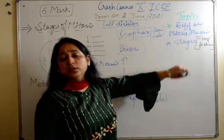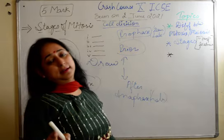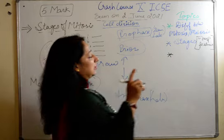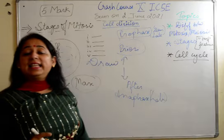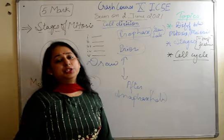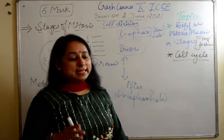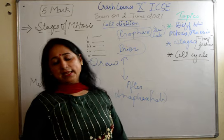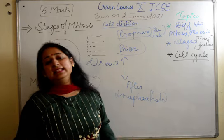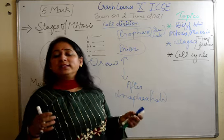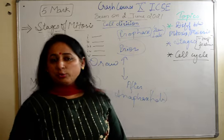Very important 5-marker question — the stages. The next important topic is the cell cycle. The cell cycle has G1, G2, S phase, G0 phase, and M phase — multiple phases. You have to learn the whole cell cycle. There is a picture given in your book for the cell cycle — please do that picture, please learn that picture. All the one-marker answers which can be framed are there in the picture itself; you don't have to go anywhere else.